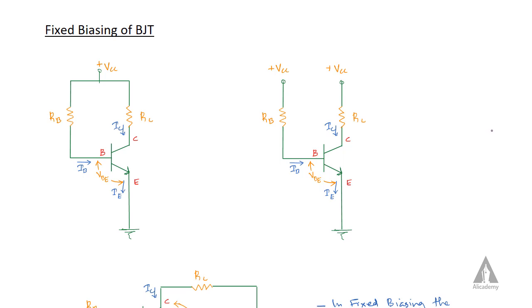In this lecture we are going to discuss about the fixed biasing of bipolar junction transistor. Transistors can work in different modes: active mode, saturation mode, cutoff mode, and reverse active mode. In order to make the transistor work in a particular mode, we have to bias the transistor. The emitter-base junction and collector-base junction must be properly biased.